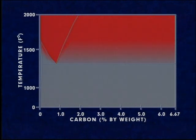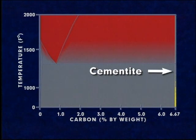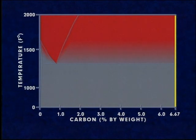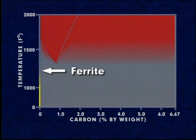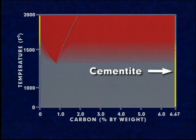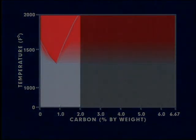The right-hand side of this iron-carbon phase diagram represents cementite, also known as iron carbide. Cementite contains 6.67 percent carbon. Though this phase diagram ranges from ferrite, with very low carbon content, to cementite, with 6.67 percent carbon, most steels contain less than 2.0 percent carbon.